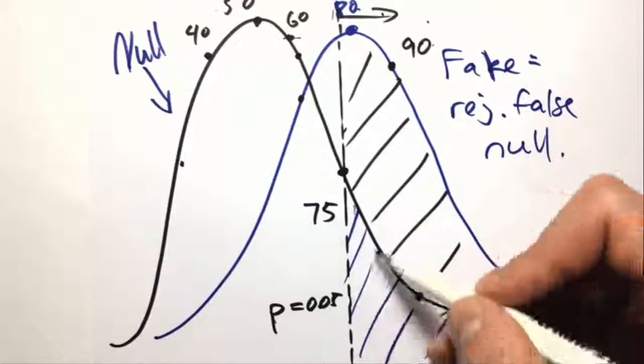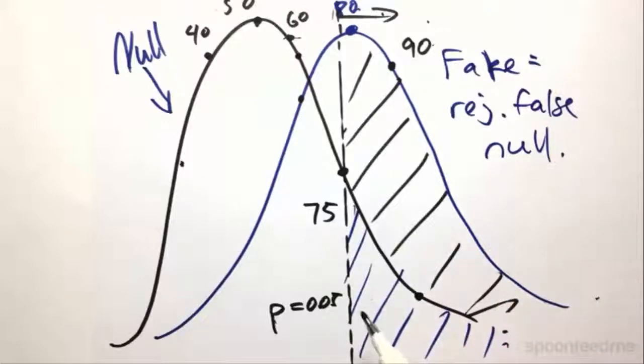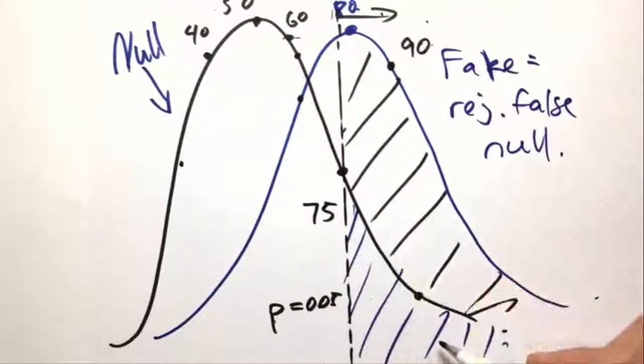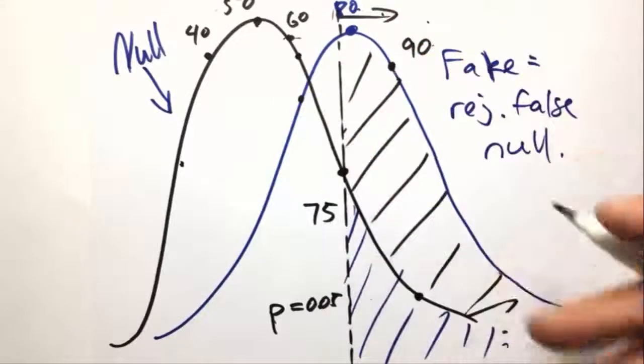So, when we said that we could have gotten an error here, that would have been that error of rejecting a true null, of it being an actual coin, but we think it's a fake coin. On the other hand, if we got something on this side, say we got maybe 60, and we said, well, it's on this side of the graph, so it's obviously a normal coin,